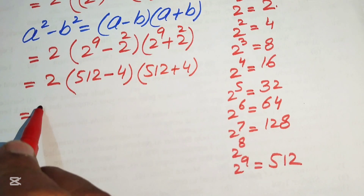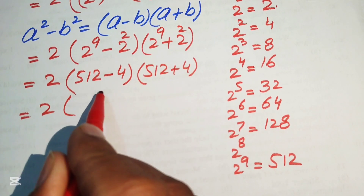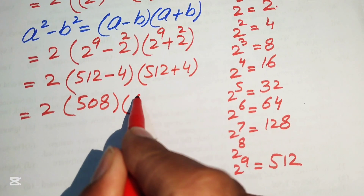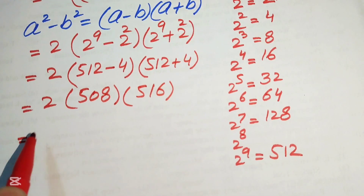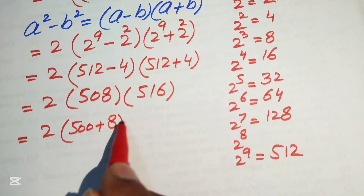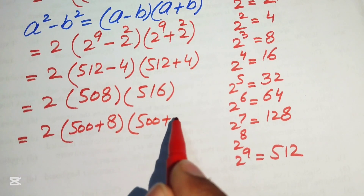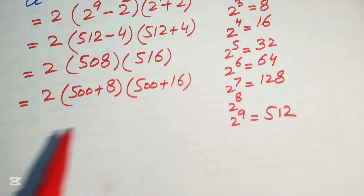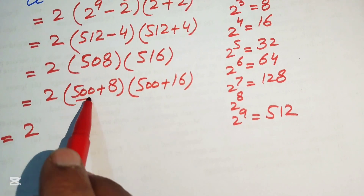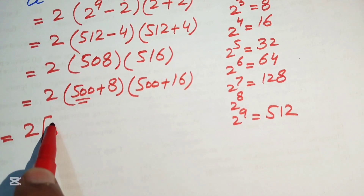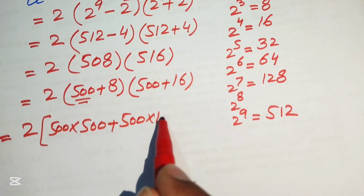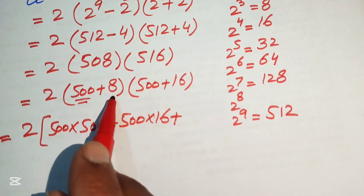So 512 minus 4 becomes 508 and 512 plus 4 becomes 516. Now we break these terms: 508 as 500 plus 8 and 516 as 500 plus 16. We need to multiply these two factors term by term, so we first multiply 500 on both terms: 500 multiplied by 500 plus 500 multiplied by 16, then we multiply 8 on both of these terms.